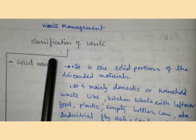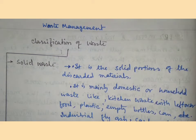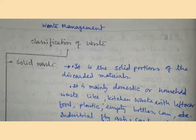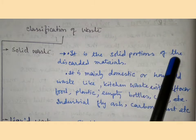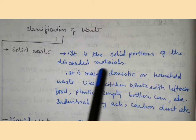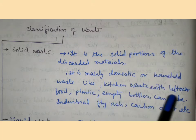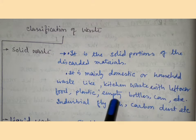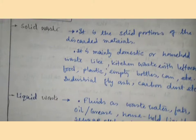Classification of waste: solid waste, liquid waste, gaseous waste, toxic waste, and non-toxic waste. Solid waste is the solid portion of discarded materials. It is mainly domestic or household waste like kitchen waste, leftover foods, plastics, empty bottles, cans, industrial fly ashes, carbon dust, etc.